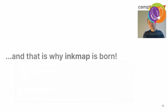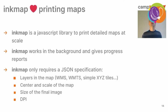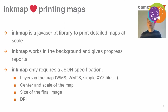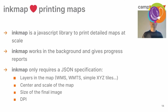These are some of the reasons why Inkmap was born. Inkmap is a JavaScript library, and its goal is to print detailed maps at scale — generating maps that will look good on paper. Inkmap is built to work in the background and give you progress reports. It really embraces the asynchronous aspect: a print job may take a long time, so it runs in the background, gives progress reports, and you can cancel the job or start another. That's fine.